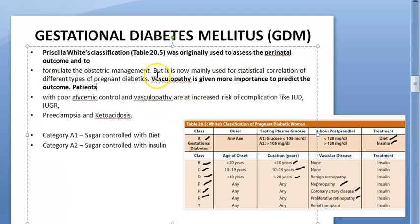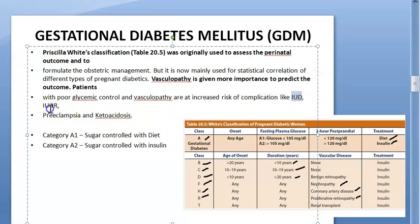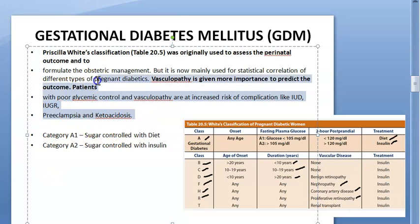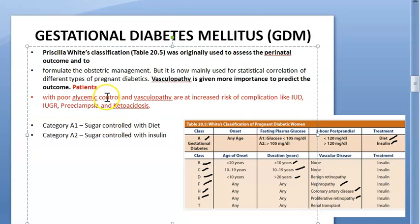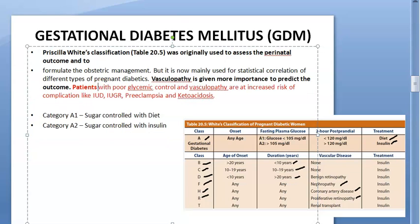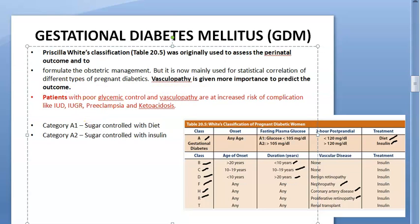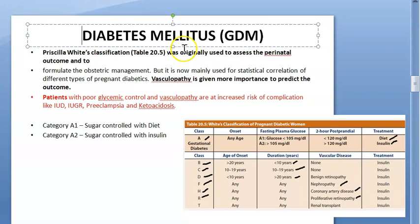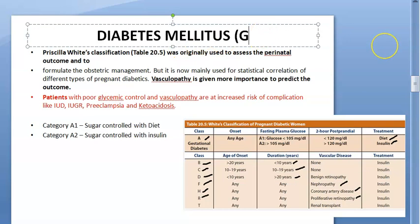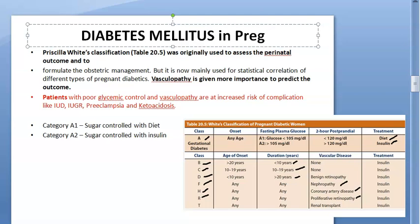Patients with poor glycemic control and vasculopathy are at increased risk of complications such as intrauterine growth restriction (IUGR), intrauterine death (IUD), preeclampsia, and ketoacidosis.